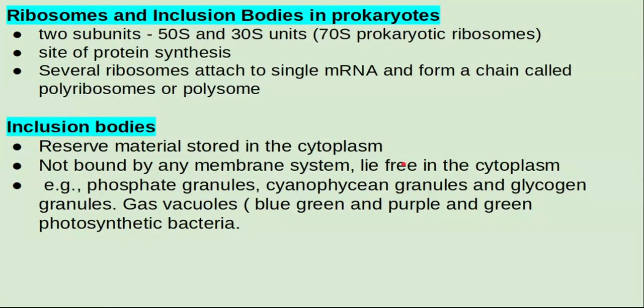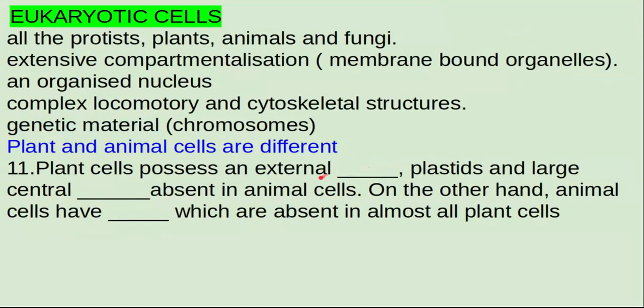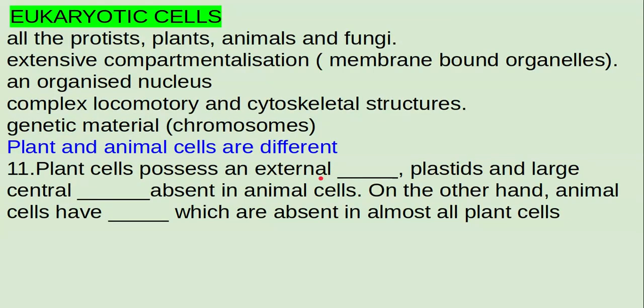In part three of this lecture, we are going to look at eukaryotic cells. The first thing we need to know is that examples of eukaryotic cells which we have studied in our previous chapters include protests, plants, animals, and fungi — all of these have eukaryotic cells.